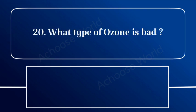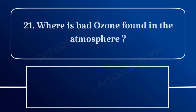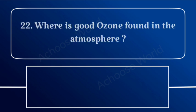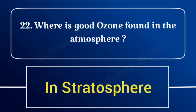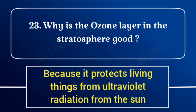What type of ozone is bad? Ground level ozone. Where is bad ozone found? In the troposphere. Why is the ozone layer in the stratosphere good? Because it protects living things from ultraviolet radiation from the sun.